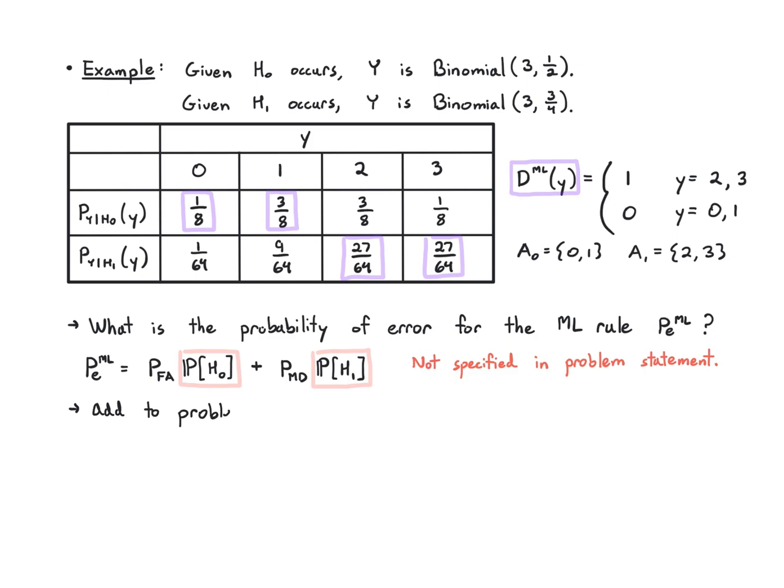What's interesting about the ML rule is I don't need to know these values to calculate the rule itself, but I do need them to analytically work out the performance of the rule. Let's just say probability of H₀ is 1/5, probability of H₁ is 4/5.